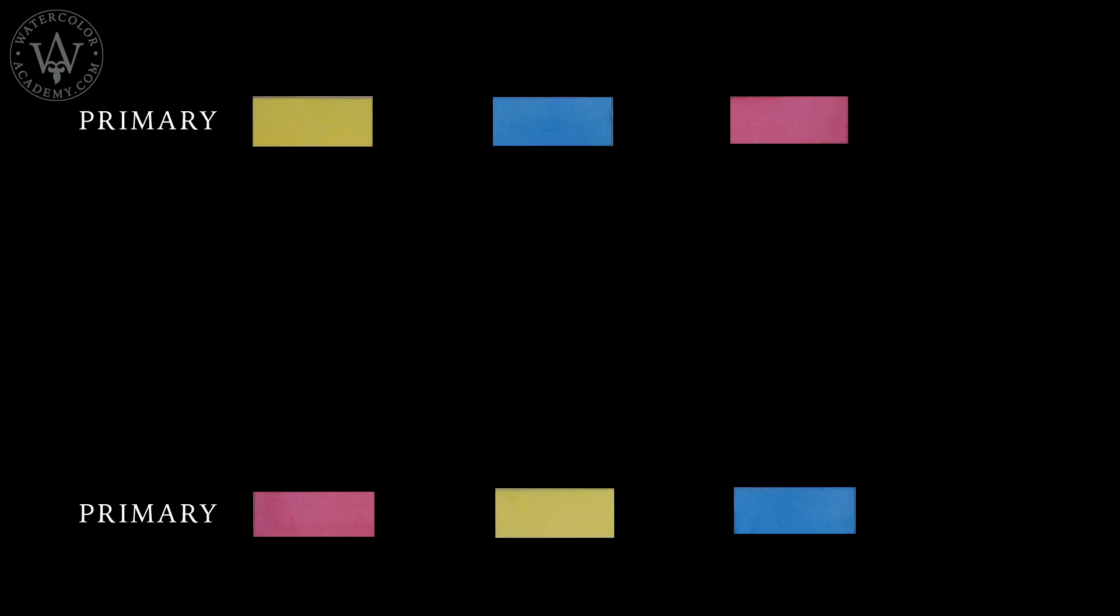When any two primary colors are mixed together, they produce a secondary color.